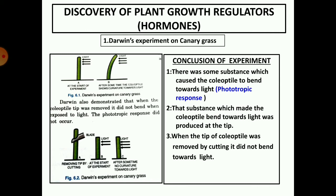The presence of these hormones was not known for a long period of time. The first indication of their existence was given by Darwin when he was studying the bending of the coleoptile of canary grass towards light. He said that there was some substance which caused the turning of the coleoptile towards light. Then he cut the tip of the coleoptile and found that it did not bend towards the light. He also concluded that that substance was produced at the tip of the coleoptile and moved down to bring about the curvature towards the light.